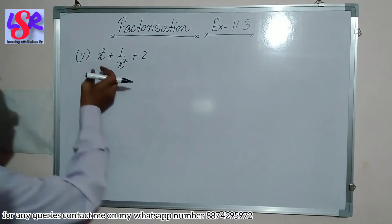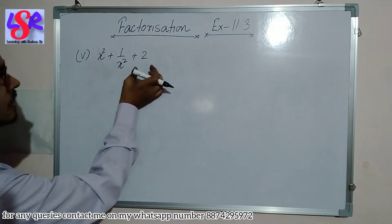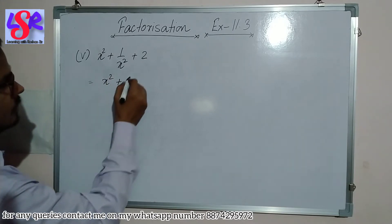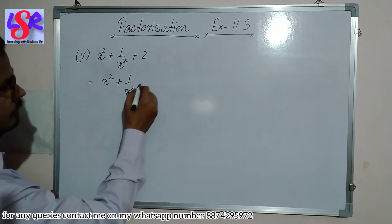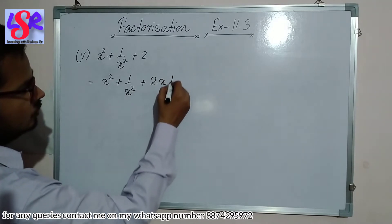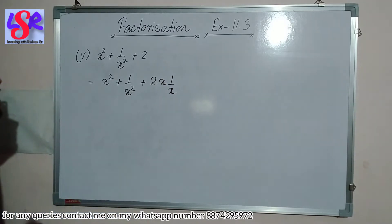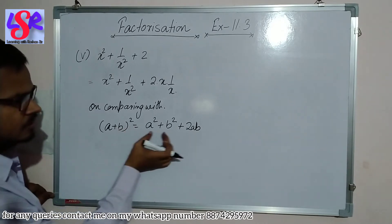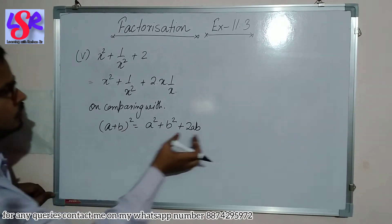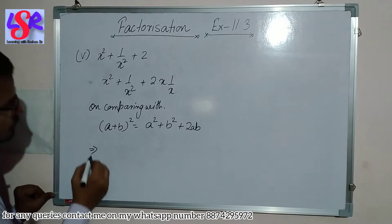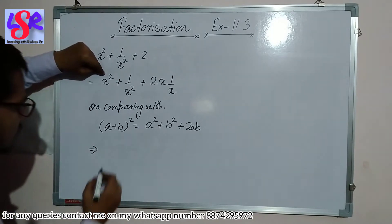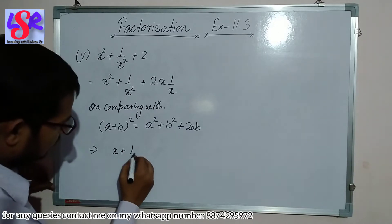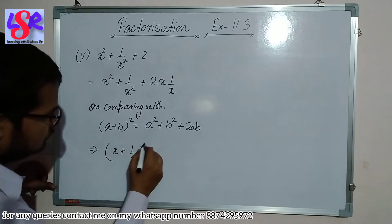Now the fifth part: x²+1/x²+2. This can be written as x²+1/x²+2×x×(1/x). Comparing with (a+b)²=a²+b²+2ab, with a=x and b=1/x, we get (x+1/x)² as the answer.